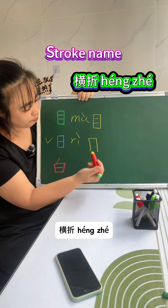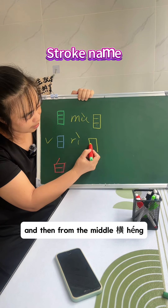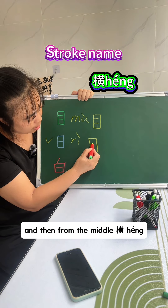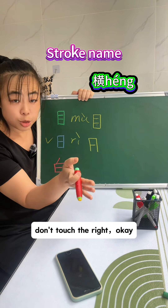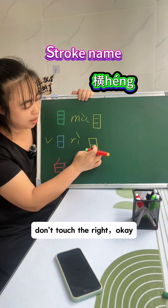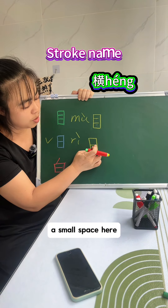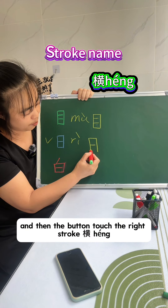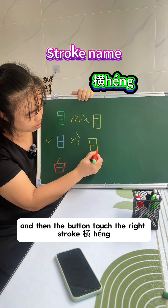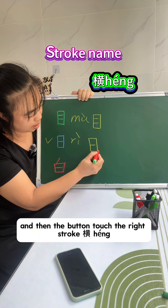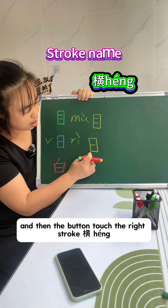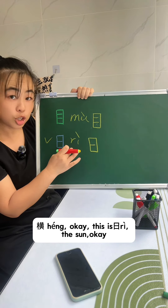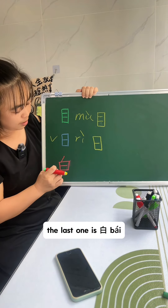横, 折. And then from the middle, 横 — don't touch the right. A small space here. And then the bottom, touch the right stroke. 横, 横 — this is 日, the sun character.